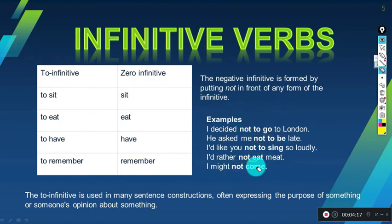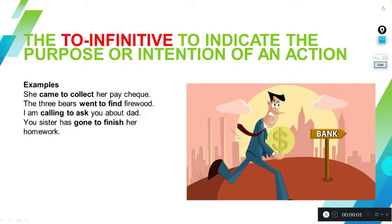Now we're going to check the main difference between the to-infinitive and the bare infinitive, because both of them have different ways to use them. First, we have the to-infinitive. We're going to use the to-infinitive to indicate the purpose or intention of an action. It will answer the question 'why do we do something?'